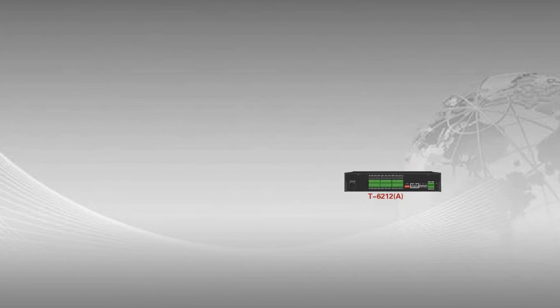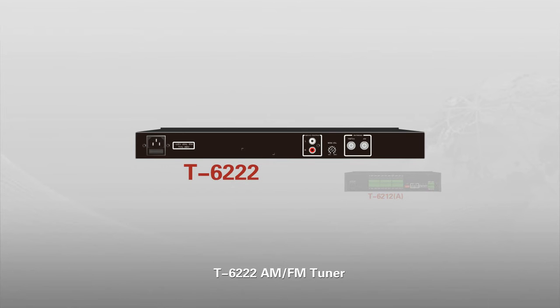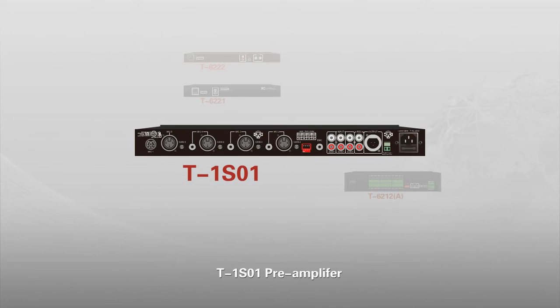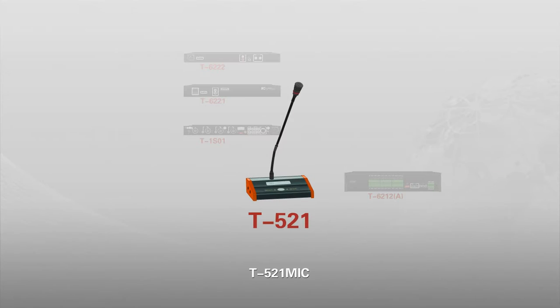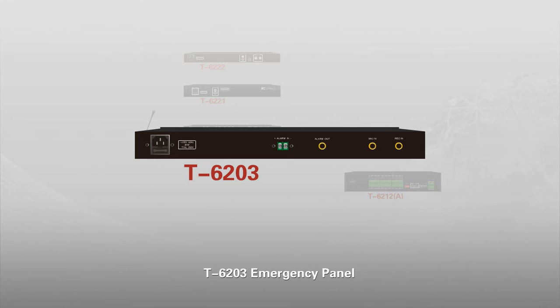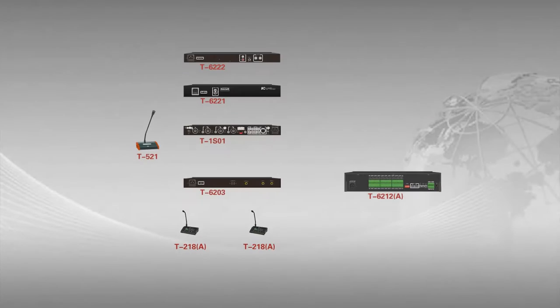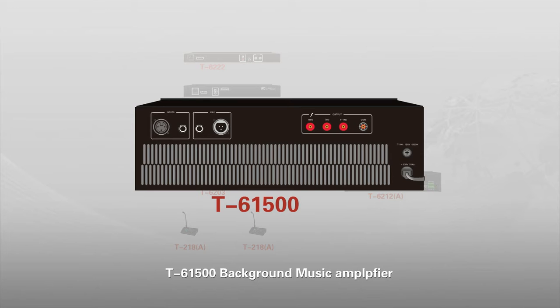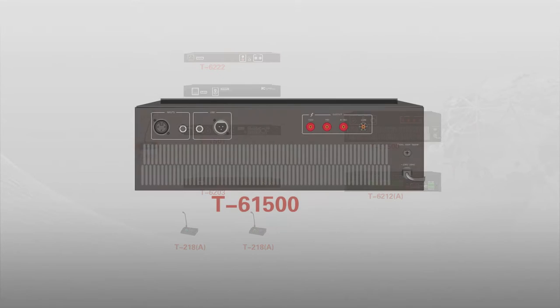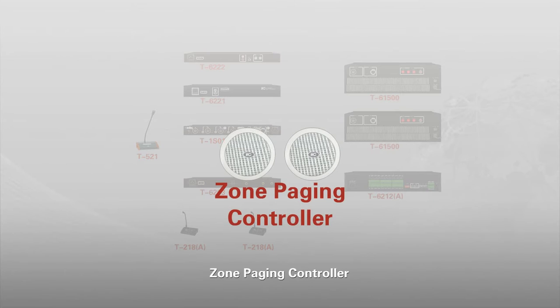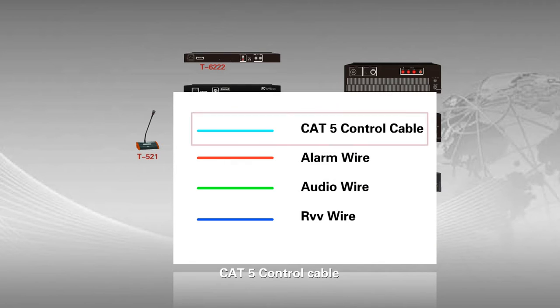Connection. T-6212A. T-6222 AM FM tuner. T-6221 CD player. T-1S01 Pre-Amplifier. T-521 Microphone. T-6223 Emergency panel. T-218A Zoom Paging mike. T-61500. Background music offline. T-618A. Amplifier. Zoom paging controller via CAT5 control cable.